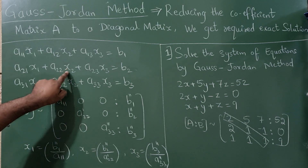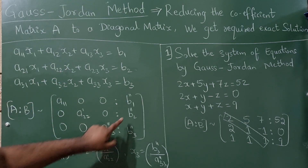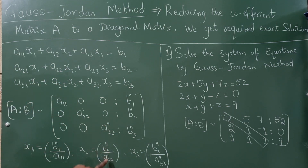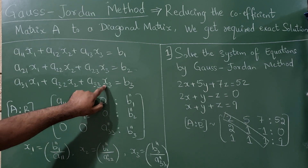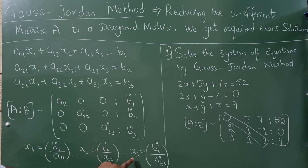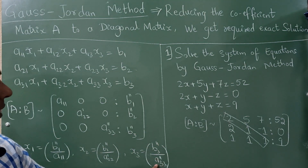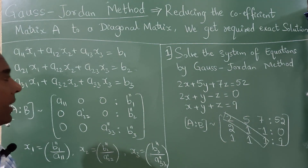X2 from here equals B2'' / A22', and X3 equals B3'' / A33''.